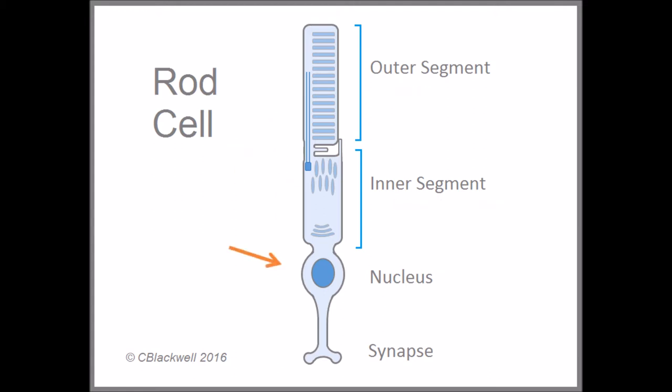The nucleus is where the DNA blueprints are kept and transcribed into mRNA. The synapse is where the photoreceptor, which is a sensory neuron, connects to other nerve cells in the chain we mentioned.